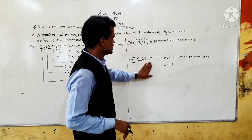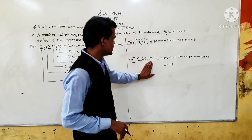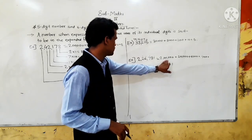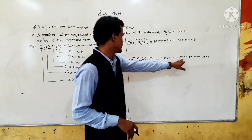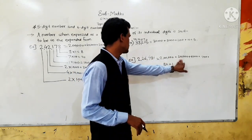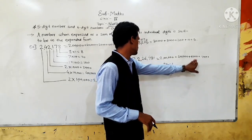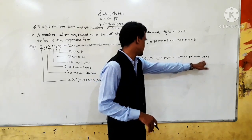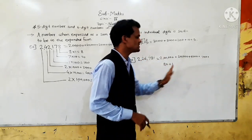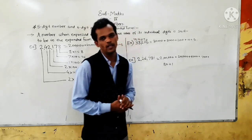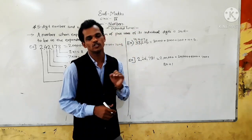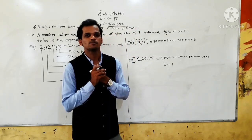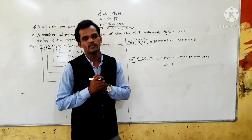So, 226,781 in expanded form is: 2,00,000 + 20,000 + 6,000 + 700 + 80 + 1. In this way, you have to write the number in the expanded form. Thank you.